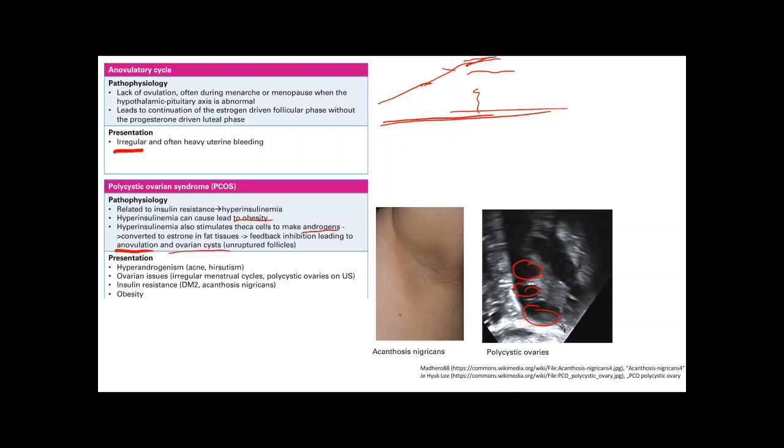And finally, insulin resistance is classic for diabetes mellitus 2. And then you get the acanthosis nigricans, which, again, is classic for diabetes 2, which is related to hyperinsulinemia. Insulin, which is a growth factor leading to increased growth of these skin cells, leading to thickening and darkening. And, again, obesity, which is related to that hyperinsulinemia.